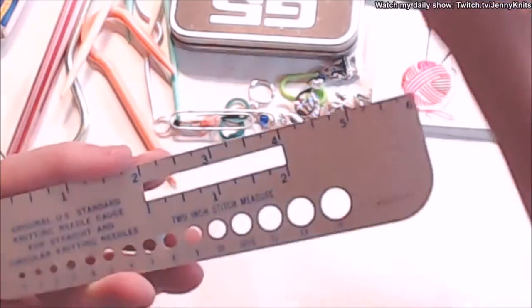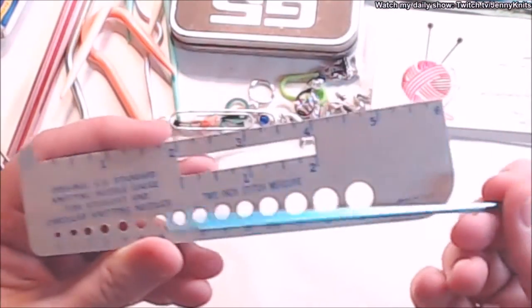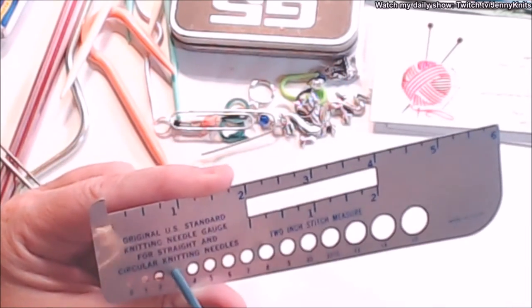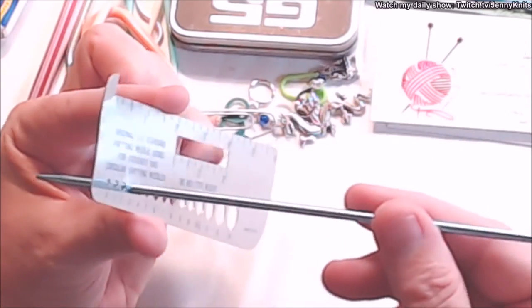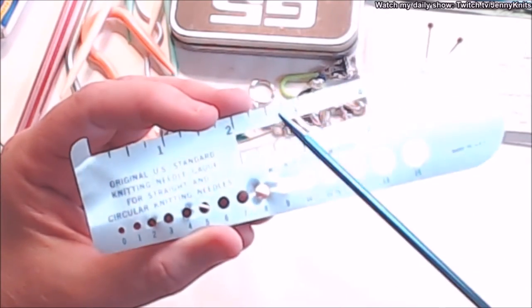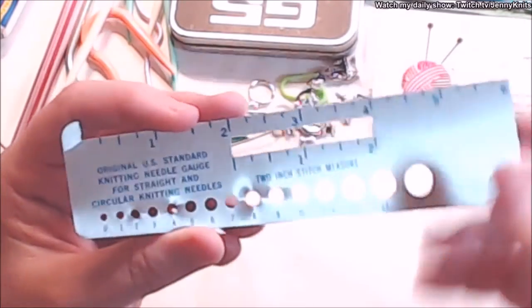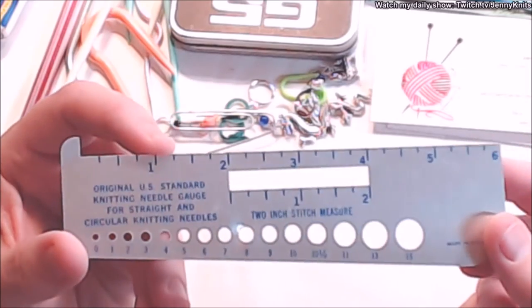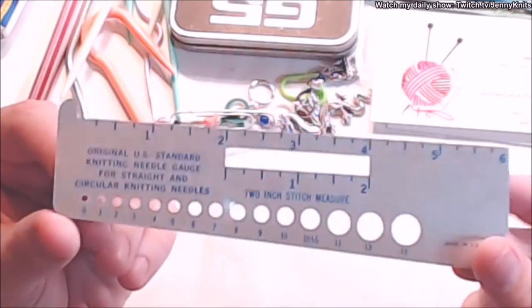This is also a thing to keep track of your needle sizes. If I pick up a pair of knitting needles and I have no idea what size these are, I just start poking them through holes until I find the one that it pokes through. That's a size 3 double point needle. Very handy to have this needle guide and stitch gauge marker.